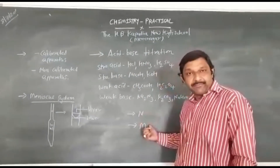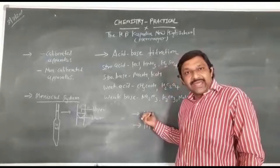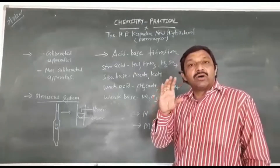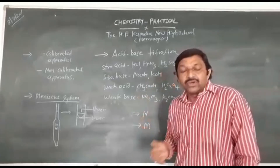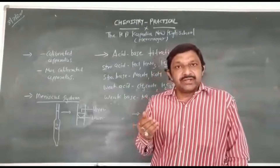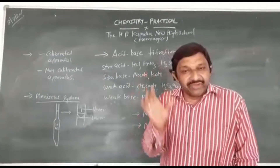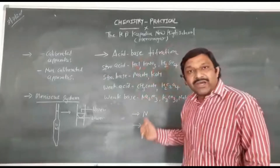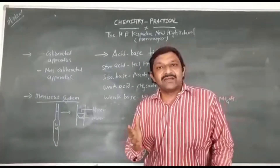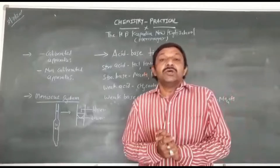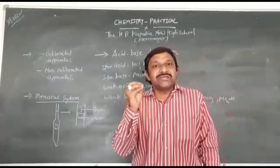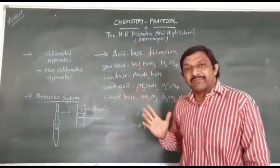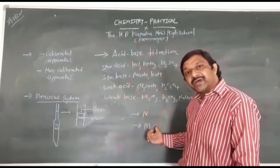After glassware, we will discuss about capital N and capital M. Capital N is the symbol of normality and capital M is the symbol of molarity. Normality of the solution is the number of gram equivalent weight dissolved per liter at room temperature. Molarity of the solution is the number of moles dissolved per liter at room temperature.